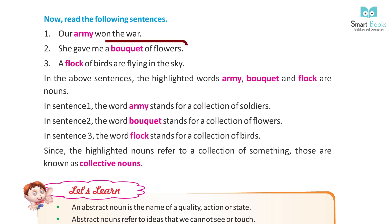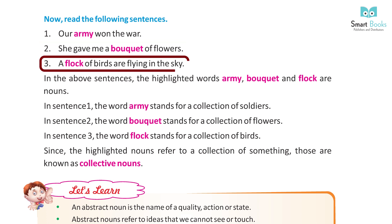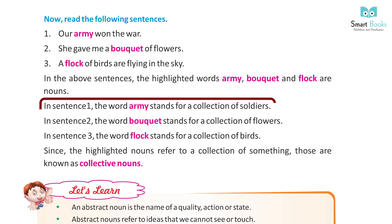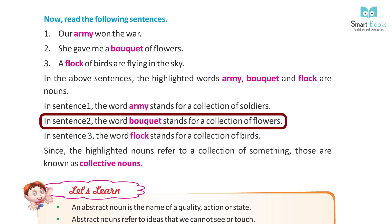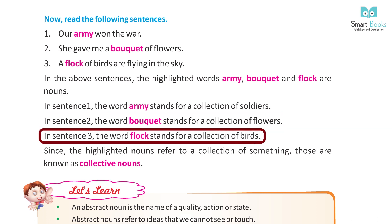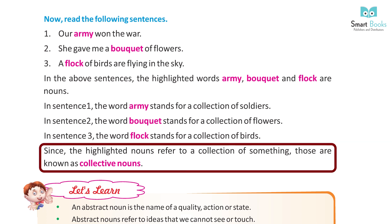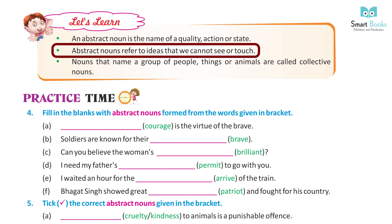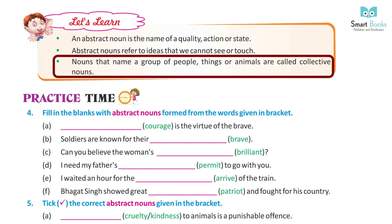Now read the following sentences: 1) Our army won the war. 2) She gave me a bouquet of flowers. 3) A flock of birds are flying in the sky. In the above sentences, the highlighted words army, bouquet and flock are nouns. Army stands for a collection of soldiers; bouquet stands for a collection of flowers; flock stands for a collection of birds. Since these nouns refer to a collection of something, they are known as collective nouns. An abstract noun is the name of a quality, action or state that we cannot see or touch. Nouns that name a group of people, things or animals are called collective nouns.